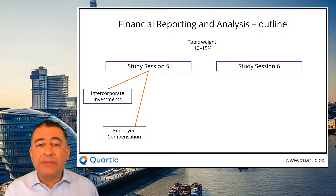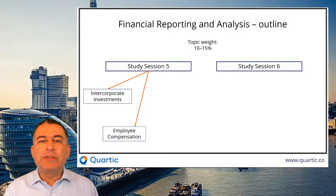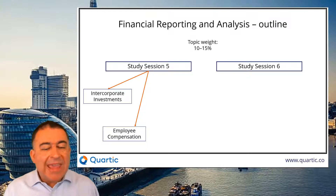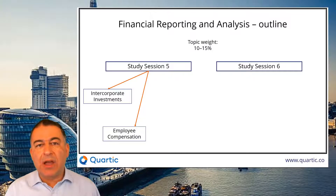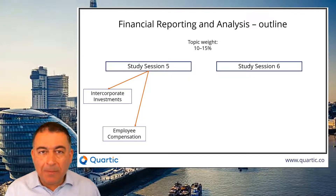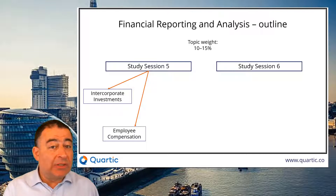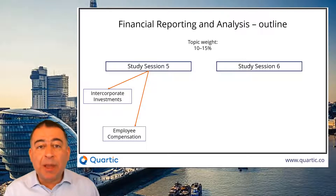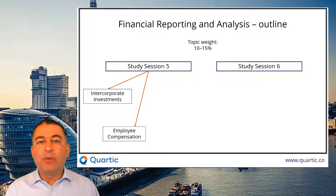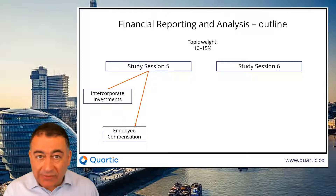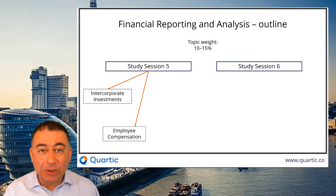We then move into employee compensation — pensions and other post-retirement benefits. It's pretty complex. Although it becomes mechanical once you've done it a few times, the first time you see this it's quite challenging. We look at different rules under IFRS and US GAAP — you need to be familiar with both. How the balance sheet works is relatively straightforward, but how the income statement and OCI (other comprehensive income) work is way more complex. We see all sorts of strange things, especially under US GAAP, including amortization calculations that are not particularly intuitive.